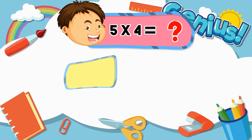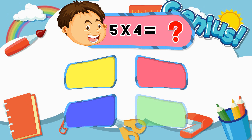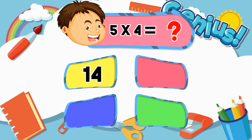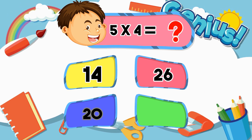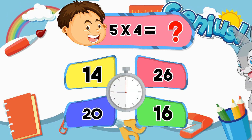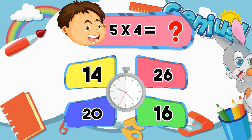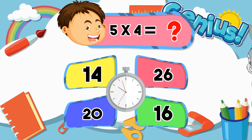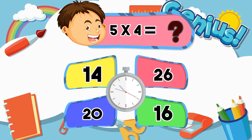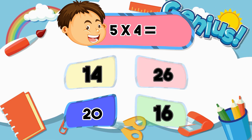What is 5 times 4? 14, 20, 16. Answer: 20.